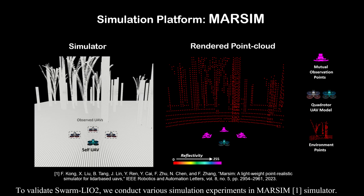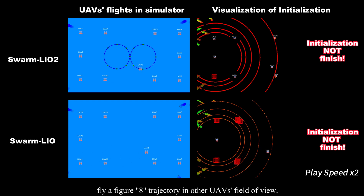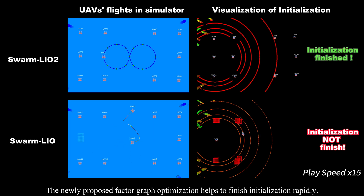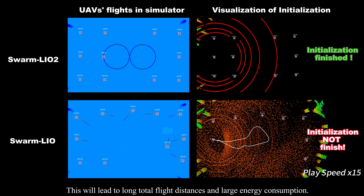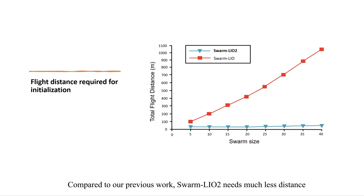To validate Swarm LiO2, we conduct various simulation experiments in the Marsim Simulator. In the Initialization test, UAV1 flies a figure-8 trajectory in other UAVs' field of view. The newly proposed factor graph optimization helps finish initialization rapidly. In contrast, the previous work Swarm LiO requires each UAV to fly a trajectory in turn, leading to long total flight distances and large energy consumption. Swarm LiO2 needs much less distance and consumes much less energy to fulfill swarm initialization.